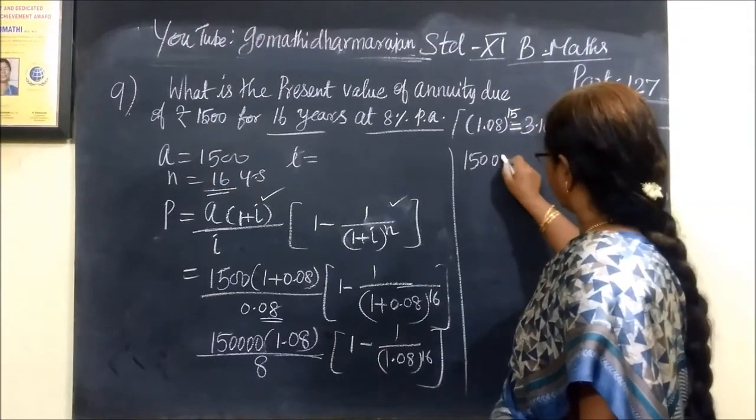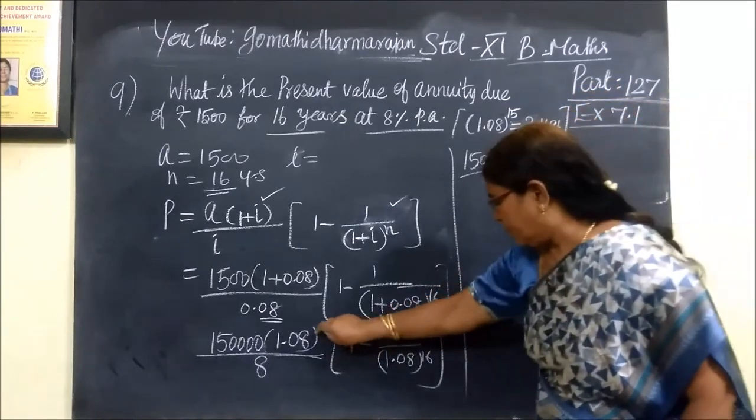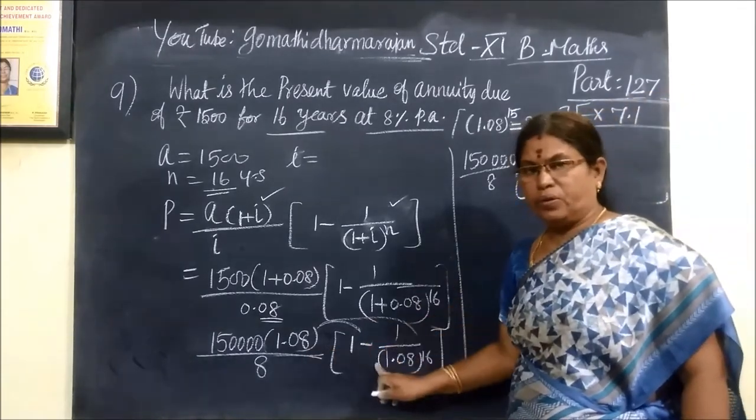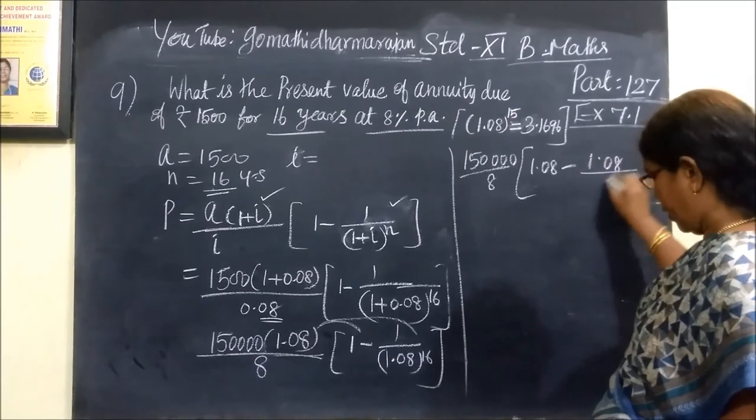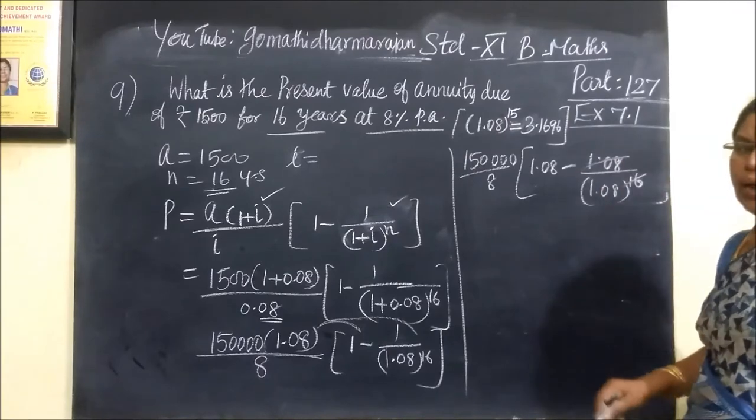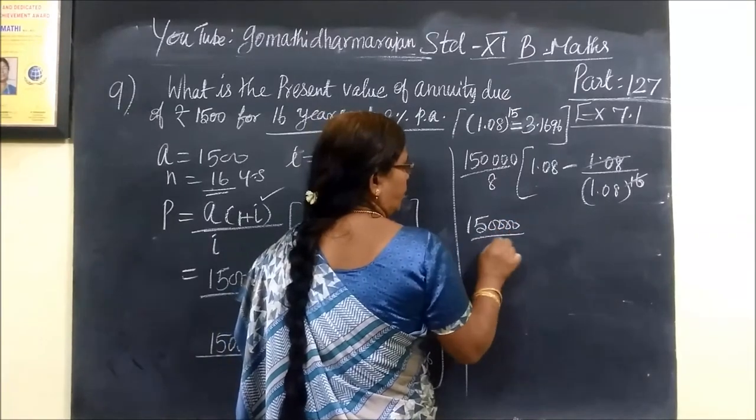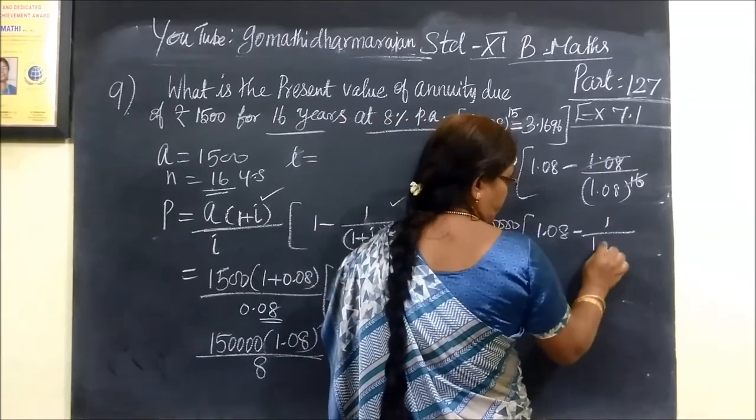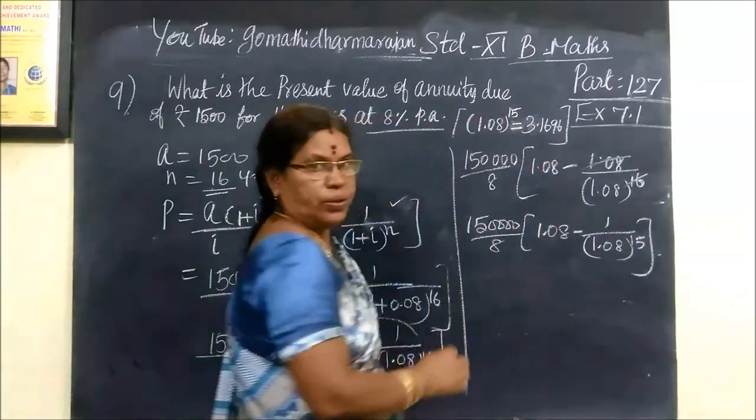1.08 by 8. 1.08 by 1.08, I am taking inside. 1.08, you are taking into the bracket. Then minus 1.08 by 1.08 to power 15. Then cancel it. In that left 15 everything. So this one by 8, then 1.08 minus 1 by 1.08 to power 15.